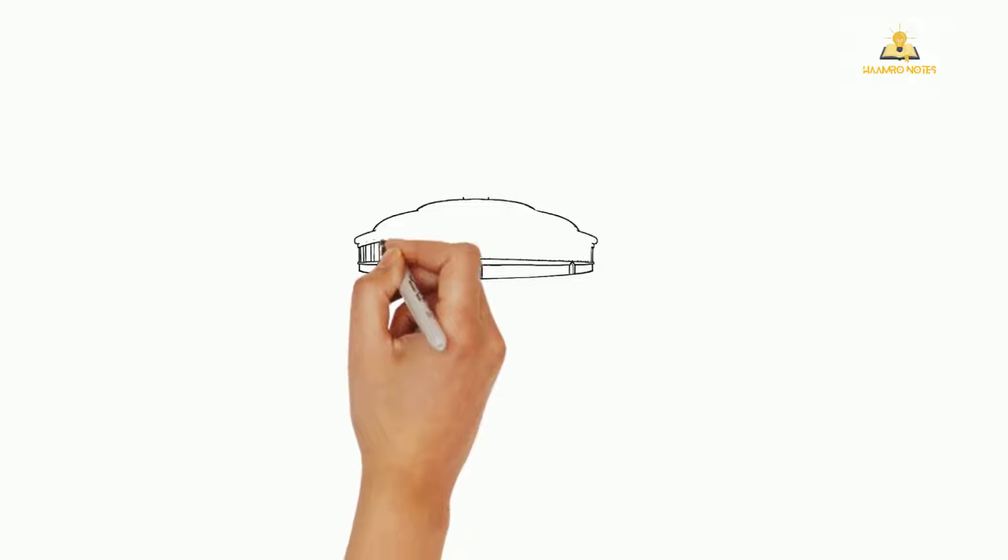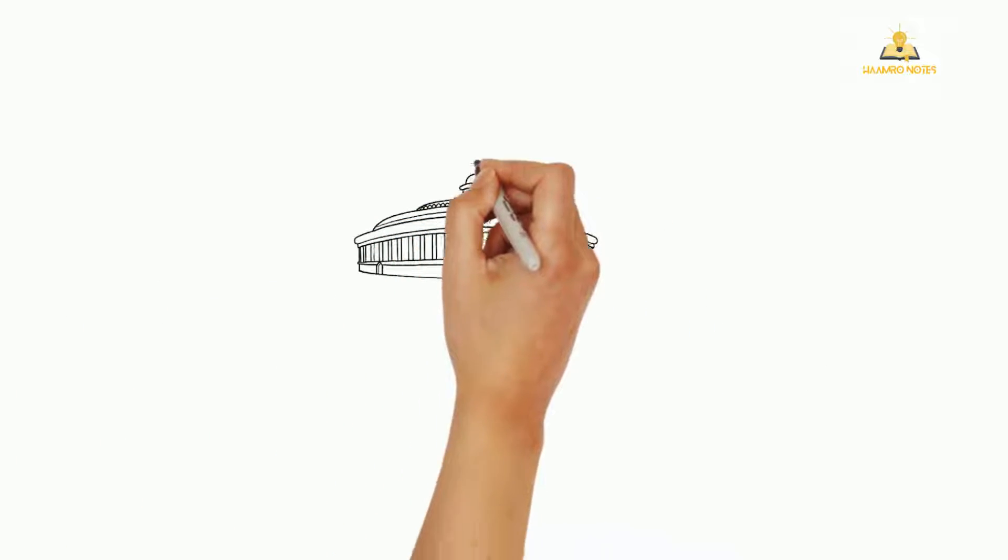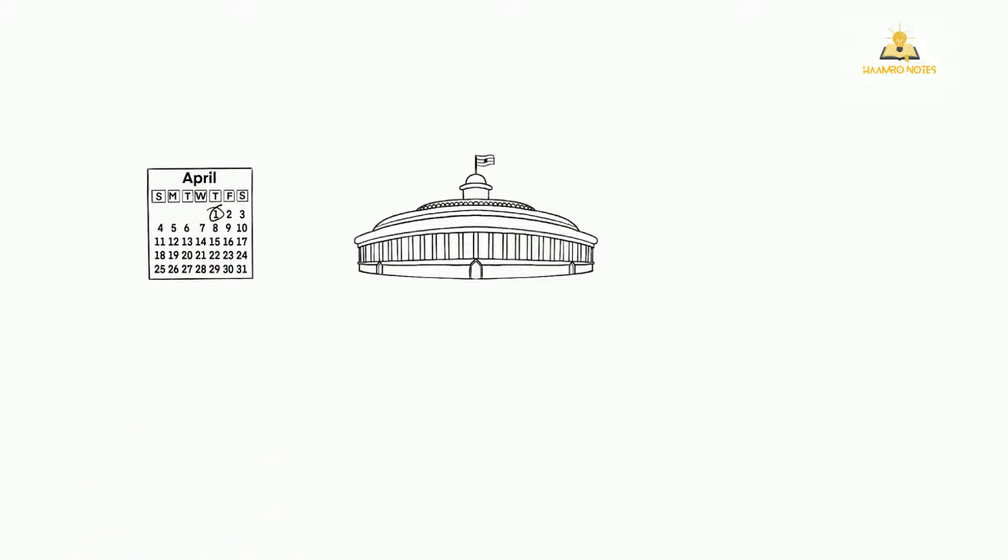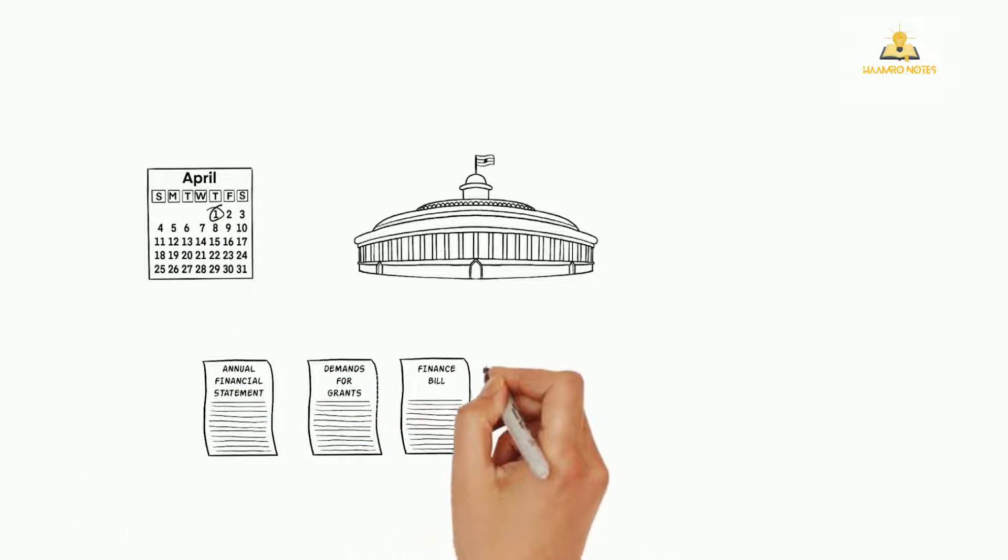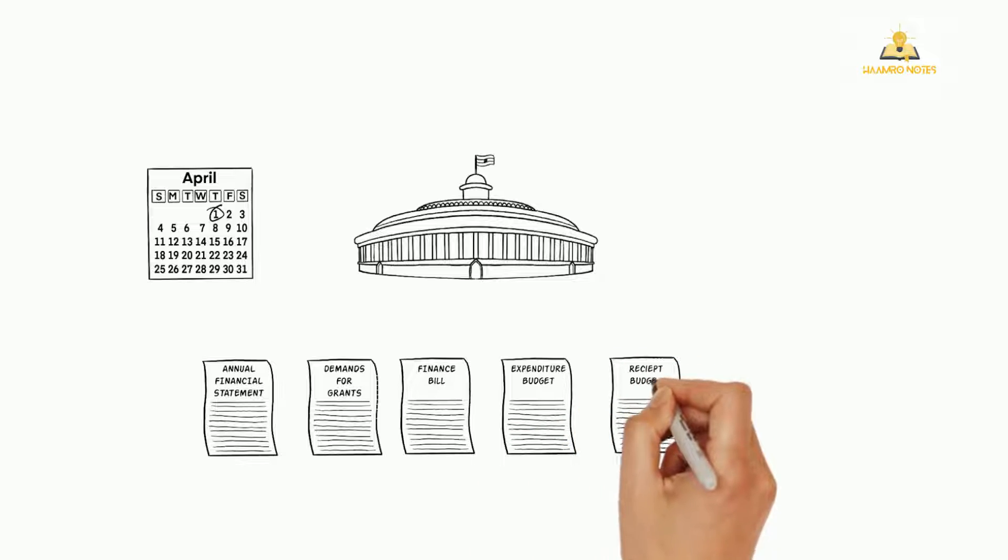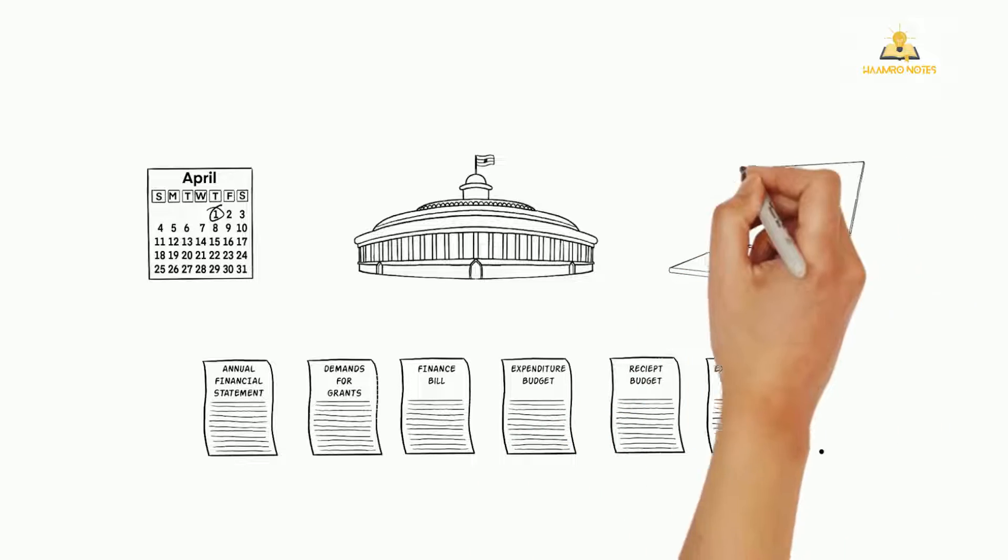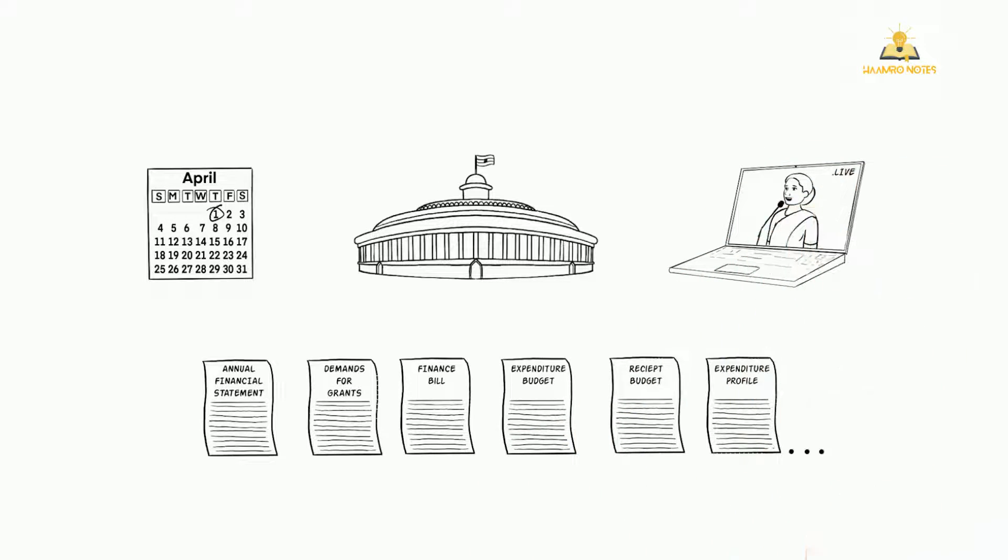The Budget presented by means of the Finance Bill has to be passed by both the Houses before it comes into effect from 1st April. There are many other lists of budget documents which are presented to the Parliament besides the Finance Minister's budget speech and can be found online.